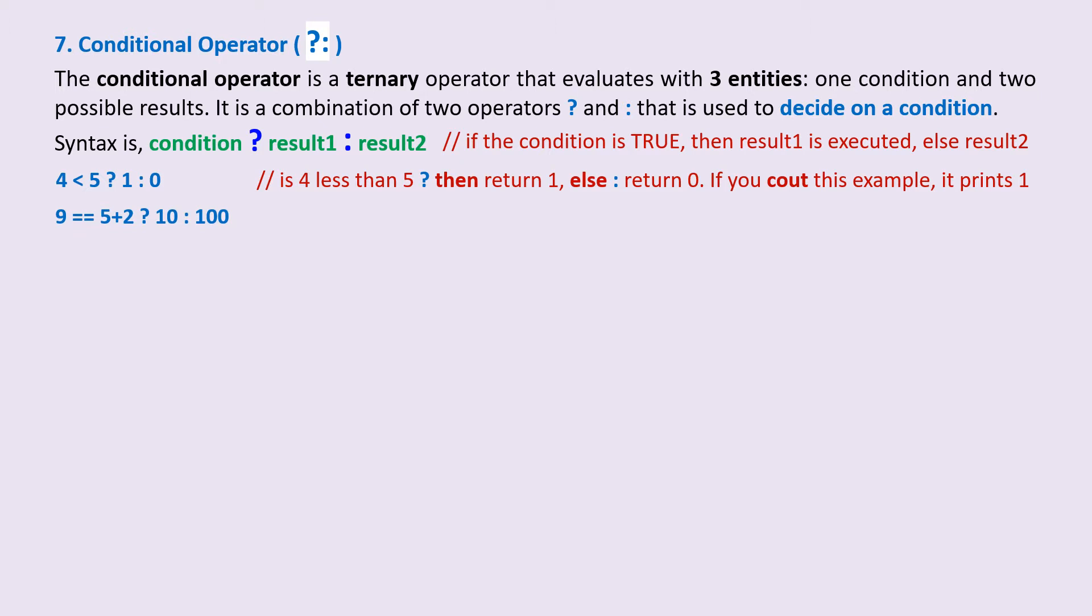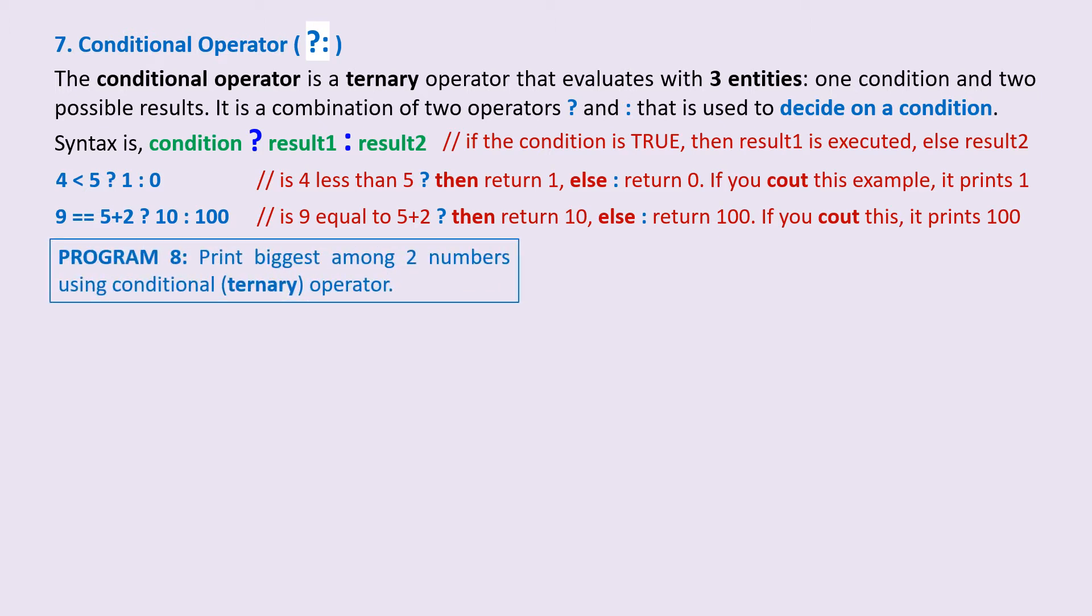Another example: 9 == 5 + 2 ? 10 : 100. Is 9 equal to 5 plus 2? If so, return 10, else return 100. If you see out this expression, it prints 100. Let's now write program 8: print the biggest among two numbers using conditional or ternary operator.